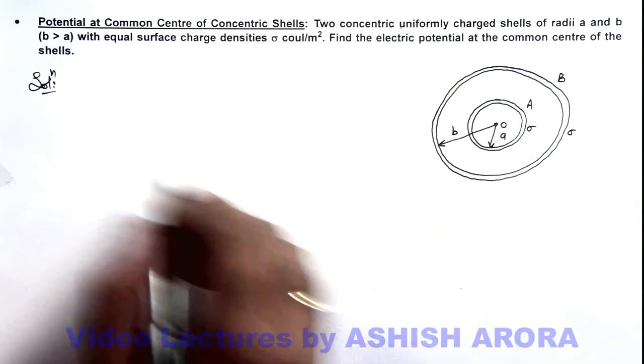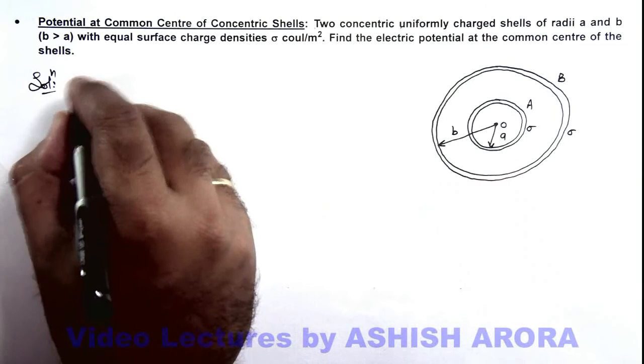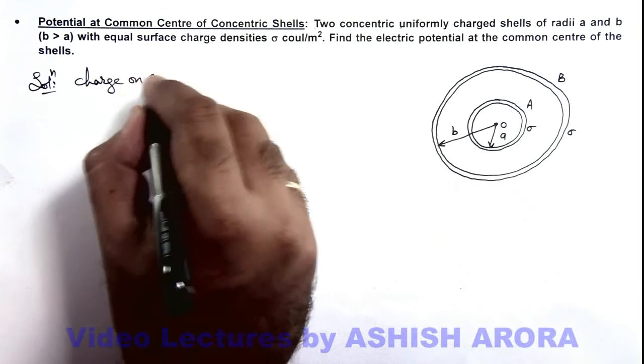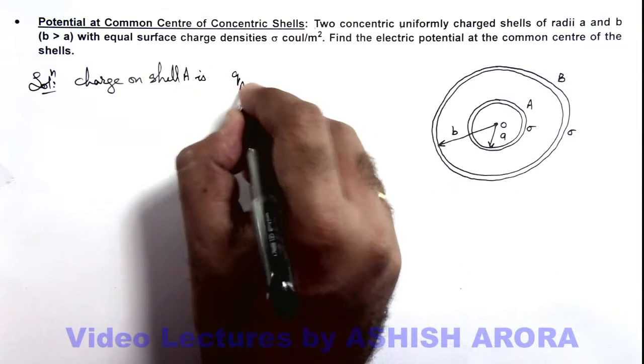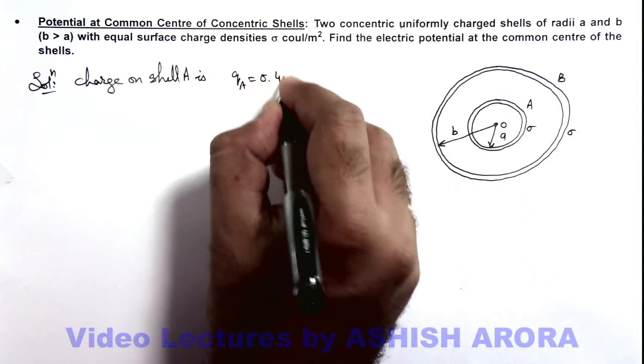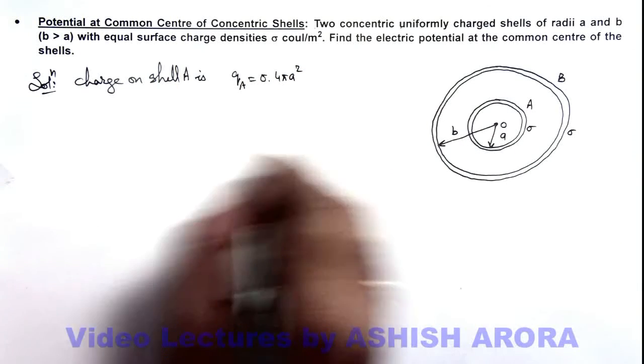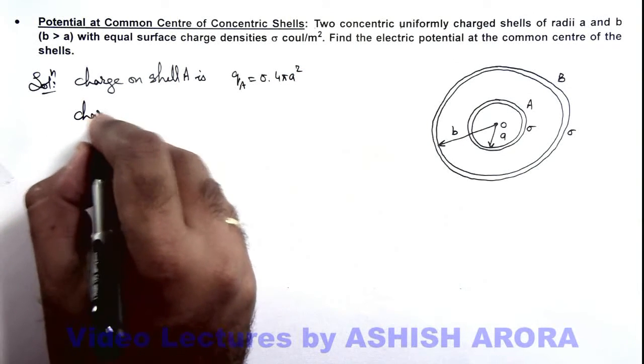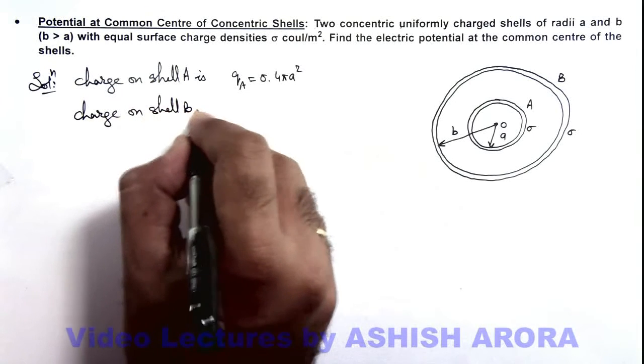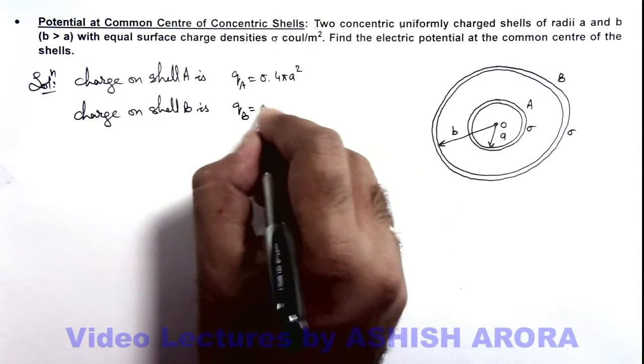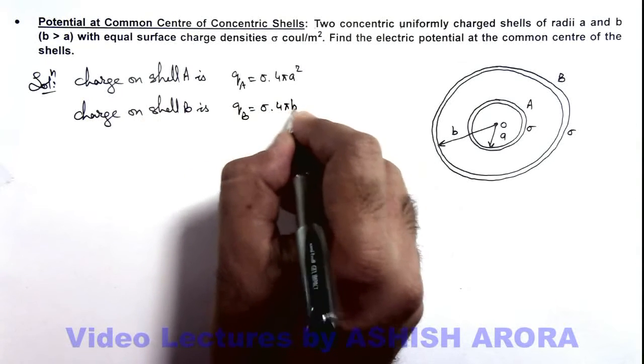And we are given that both are charged uniformly at equal surface charge density sigma. So using this sigma we can calculate the charge. On shell a is, this can be written as q_a which is sigma multiplied by 4πa² the area of shell a. And similarly we can calculate charge on shell b is q_b, which is sigma multiplied by 4πb².